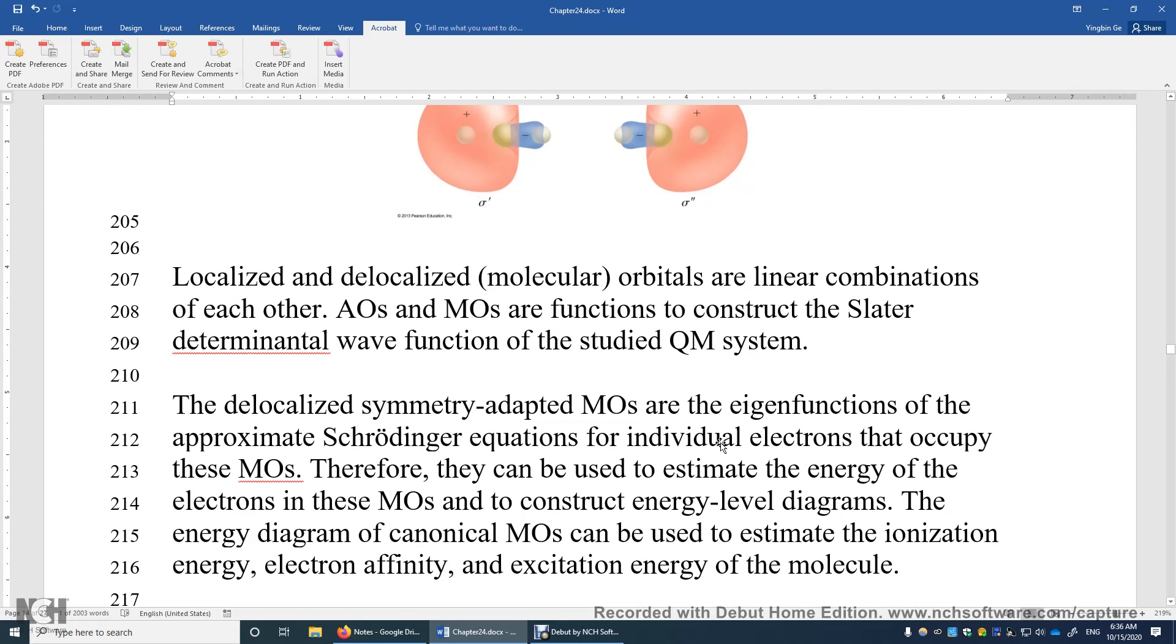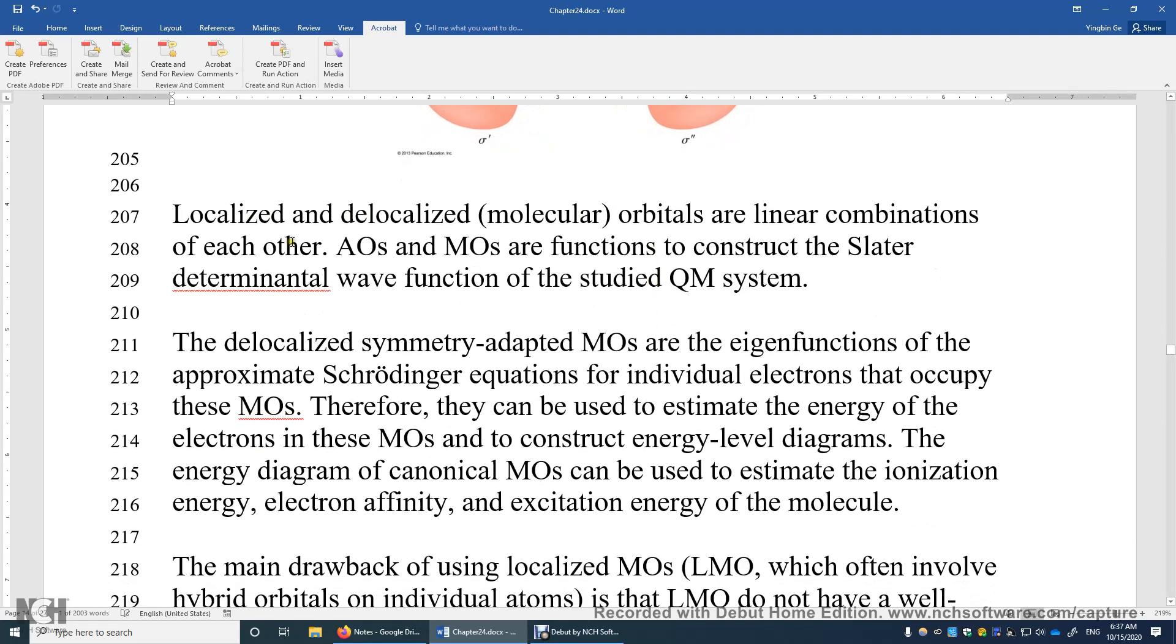So first, I want to say molecular orbitals are simply mathematical functions used to describe the wave functions of these electrons. Localized and delocalized molecular orbitals can be converted to each other because they are linear combinations of each other. They are also linear combinations of atomic orbitals.